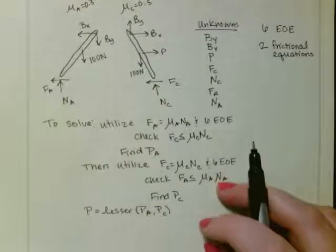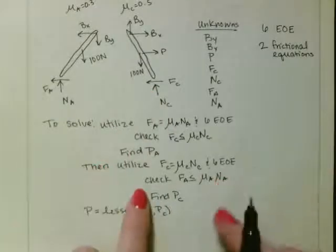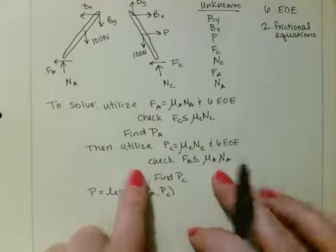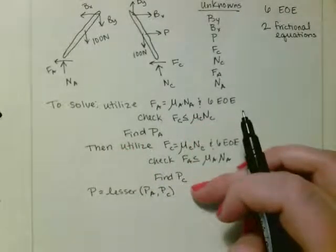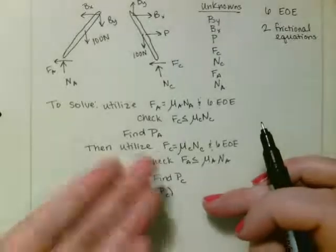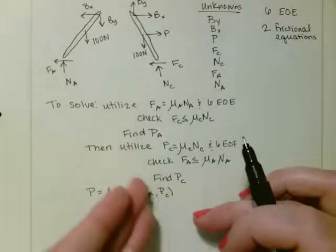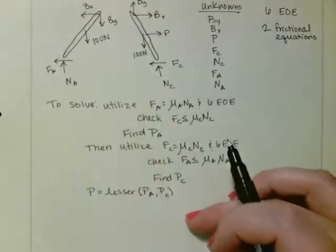And then we look at these two numbers and we compare them. If PA is less than PC, then A did indeed slip first. But if PC is less than PA, then C slipped first.